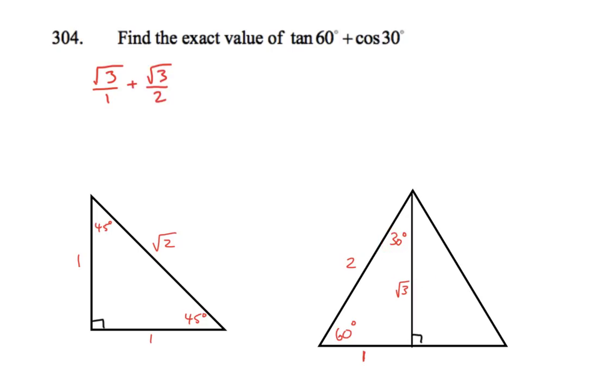And now we're adding fractions here. So we've got to change them so they've got the same bottom. So this one would change into 2 root 3 over 2. 2 root 3 over 2 plus 1 root 3 over 2 makes 3 root 3 over 2.